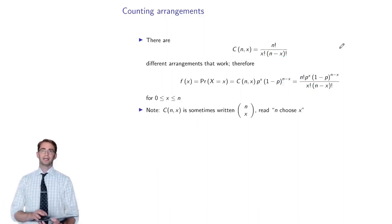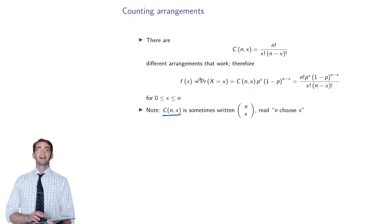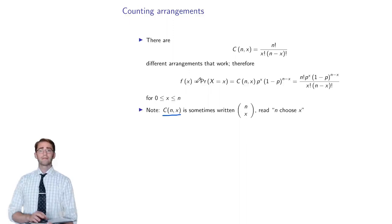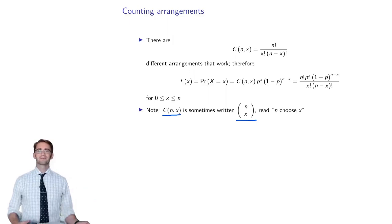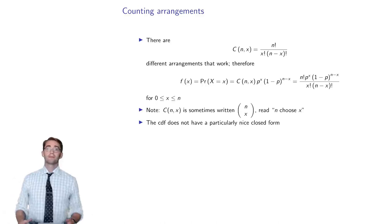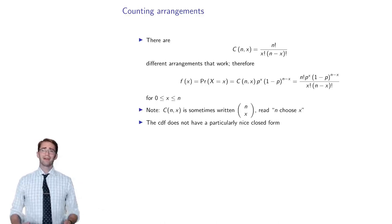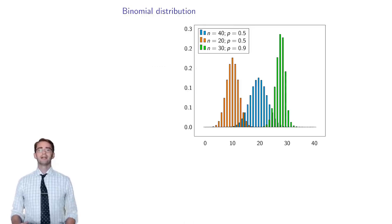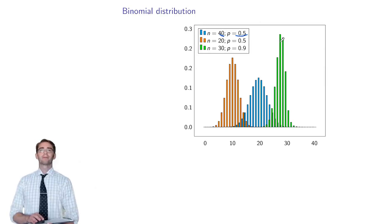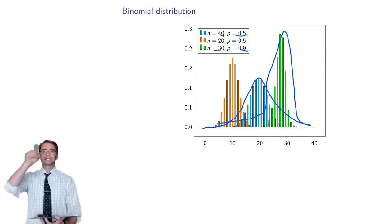You'll also see n choose x written as n on top of x in parentheses — both notations are used. The CDF for a binomial distribution does not have a particularly nice closed form; the summation doesn't reduce algebraically. The binomial distribution looks like a discrete bell curve. With 40 attempts and probability of success 0.5, you get one chart shape; with 30 attempts and success probability 0.9, you get another. It's like a discrete bell curve — that's really the way to think about it.